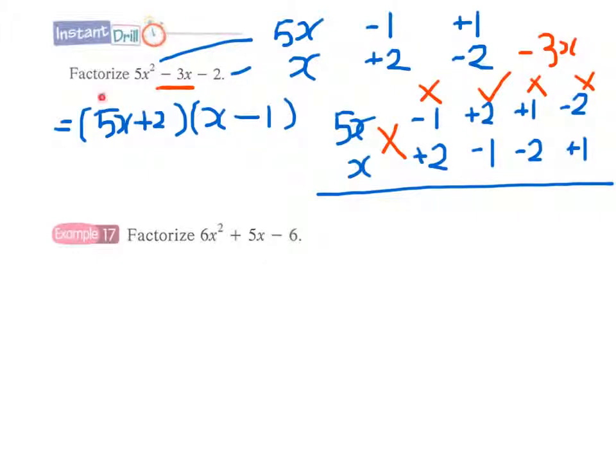Again we have to check our answer. 5x times x giving 5x², +2 times -1 giving -2, and then +2x - 5x giving -3x. And therefore we are quite sure that we have the correct answer.